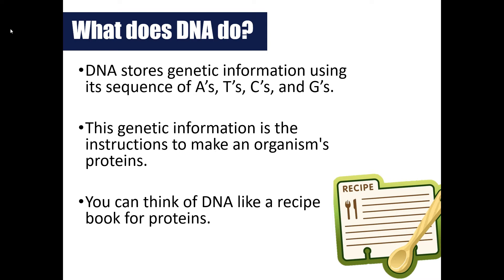DNA stores genetic information and uses those sequences of nucleotides — specifically the A's, T's, C's, and G's — to encode that genetic information. It then takes that genetic information and uses it as instructions to make proteins. Remember from unit two when we talked about the cell, the whole purpose of the cell is to make proteins. You can think of DNA as like a recipe.